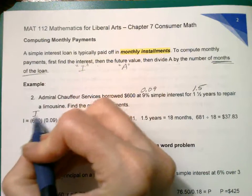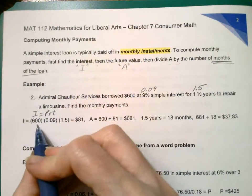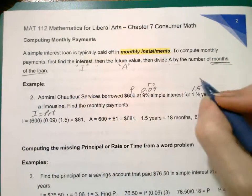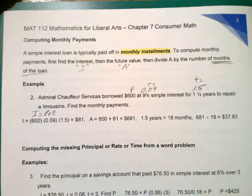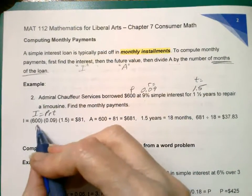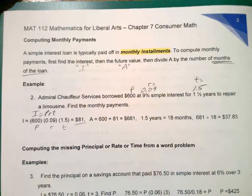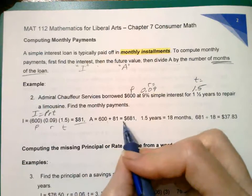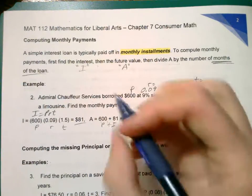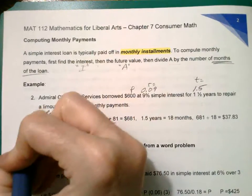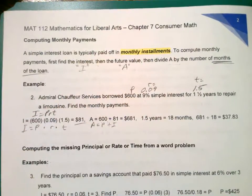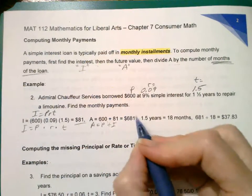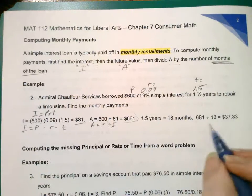Simple interest formula, I equals PRT. Principle, amount borrowed, rate as a decimal, time in years. Apparently that comes to $81. For the future value, just add that to the principal amount. I plus P is the formula for that. Remember these are multiplications. These are addition to get your future balance after one and a half years.